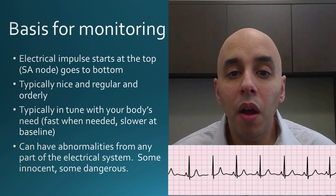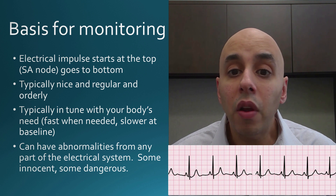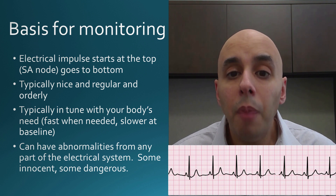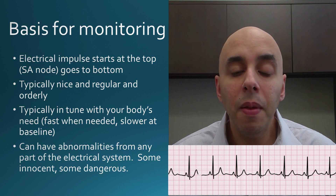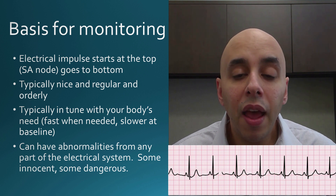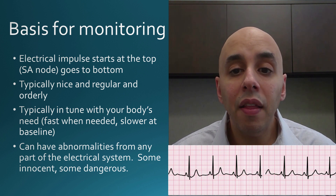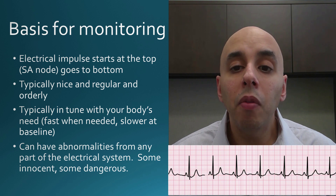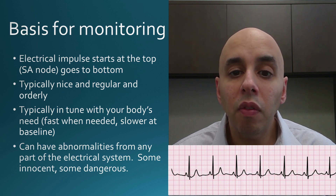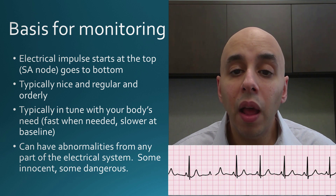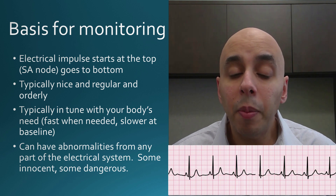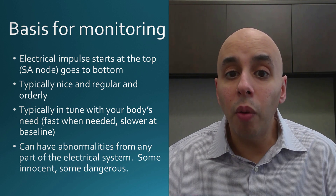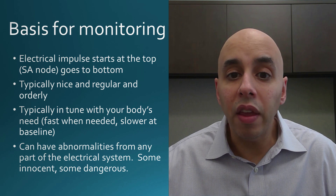The electrical system of the heart has electricity originating from the top right of the heart, and then going down to the bottom. Typically it's nice and orderly, but people can have abnormal heart rhythms, and that leaves a different EKG signal. By looking at these EKG strips, we're able to make a diagnosis and help sort out whether the abnormalities are normal, abnormal, or if they're dangerous.